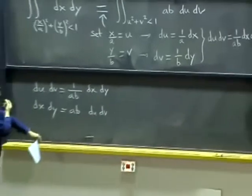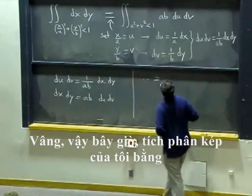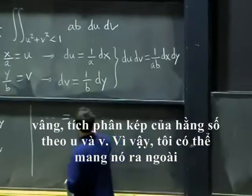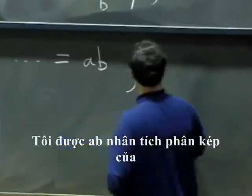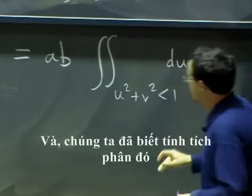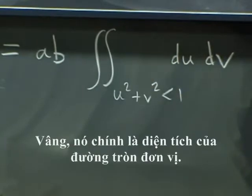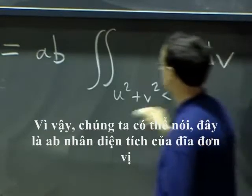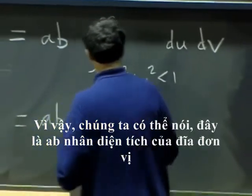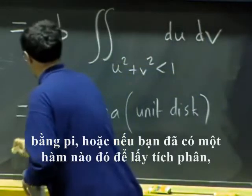And that is an integral that we know how to do. So now my double integral becomes the double integral of a constant in terms of u and v. So I can take the constant out. I will get ab times double integral over u² + v² less than one of du dv. And that is an integral that we know how to do. Well, because it is the area. It is just the area of a unit circle. So we can just say, oh, this is ab times the area of the unit disk, which we know to be π.